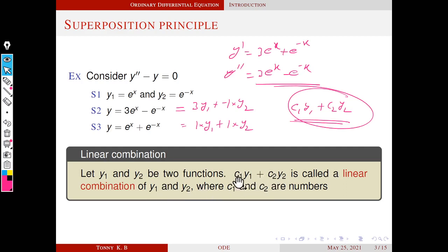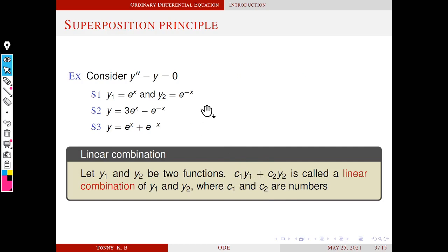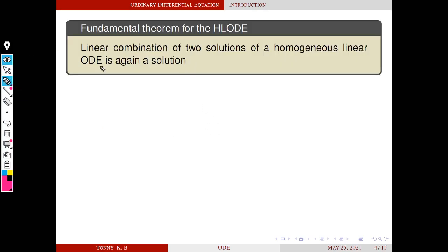Naturally, there is a question: is the linear combination a solution of a differential equation if y1 and y2 are already solutions? That question is addressed by our next result. The linear combination of two solutions of a homogeneous linear ordinary differential equation is again a solution. This is very important — it should be homogeneous. If y1 and y2 are two solutions of a homogeneous linear ODE, then their linear combination is also a solution.